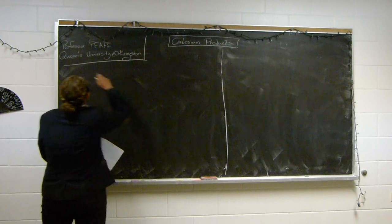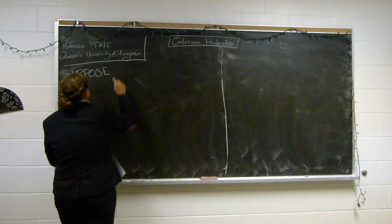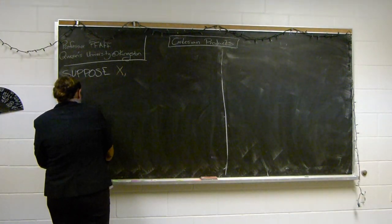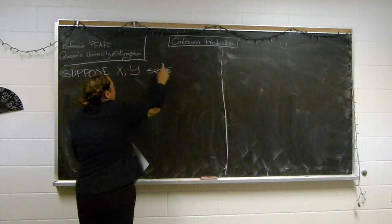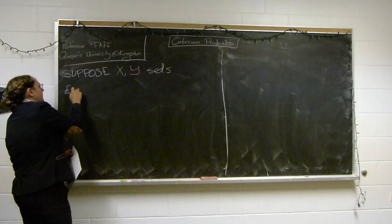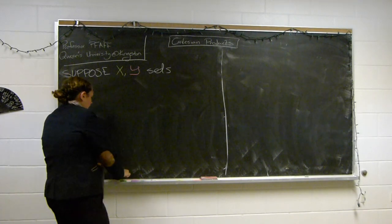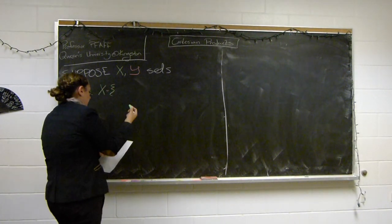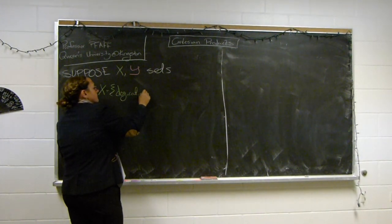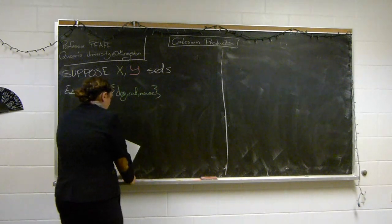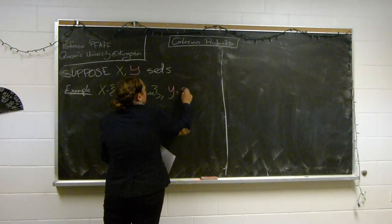So we're going to start with: suppose that we have X and Y as sets. There's no specification on what kinds of elements they have — they don't have to have even the same kinds of elements. So maybe the first one is going to be {dog, cat, mouse}, and the second one is going to be Y = {1, 2}.